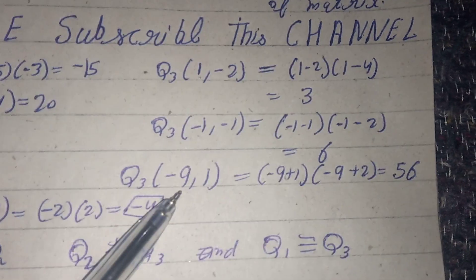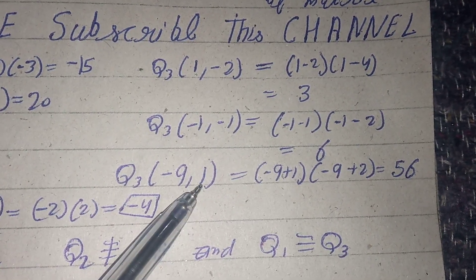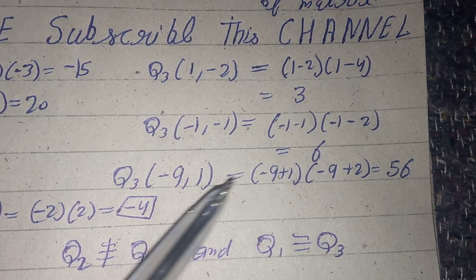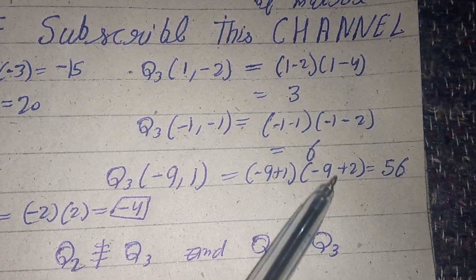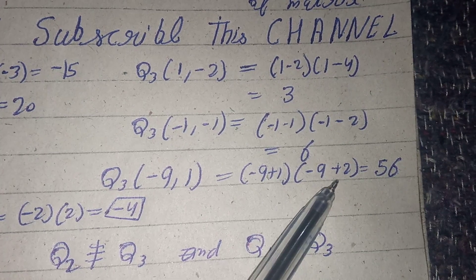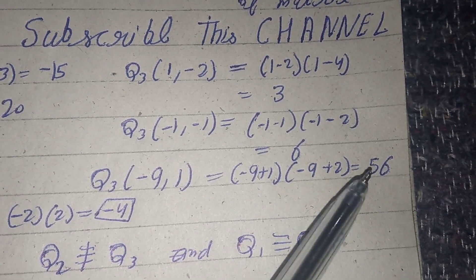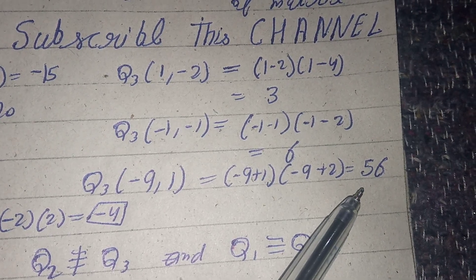And also, at x=-9 and y=1, it becomes (-9+1)(-9+2) = (-8)(-7) = 56.